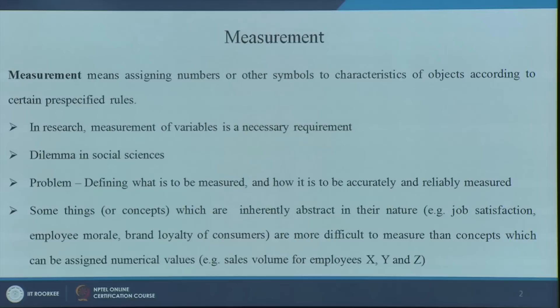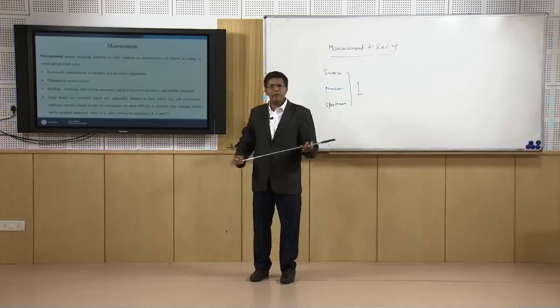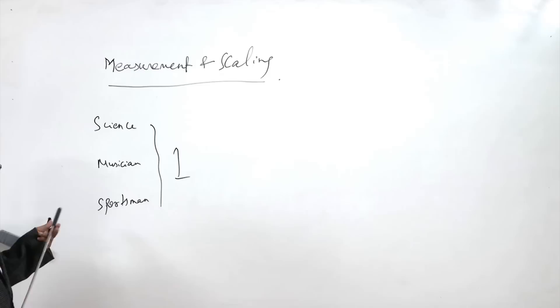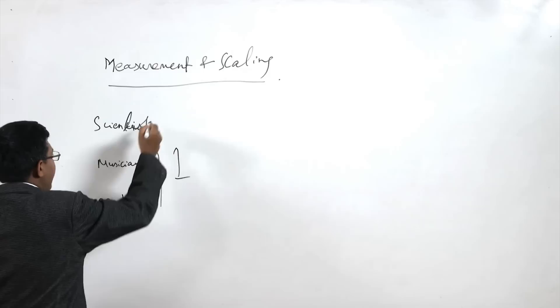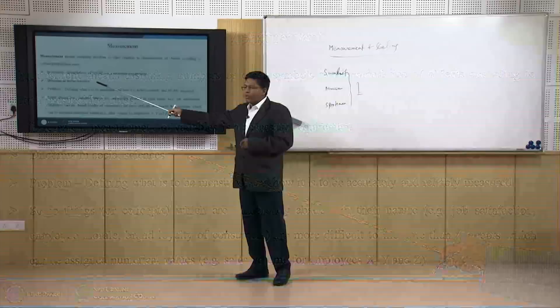So what is measurement? Measurement means assigning numbers — numbers which are symbols — to characteristics of objects according to certain pre-specified rules. Measurement of variables is a necessary requirement. Now on what parameters will I measure these three — the scientist, the musician, the sports person — is what may confuse you. This is a bigger dilemma in social science.